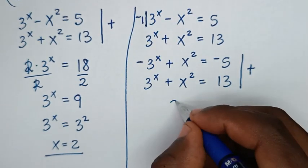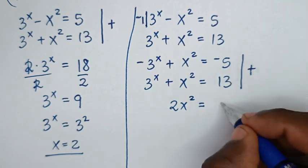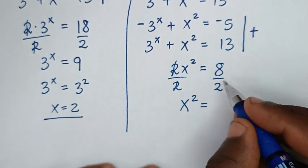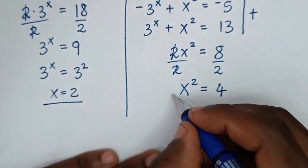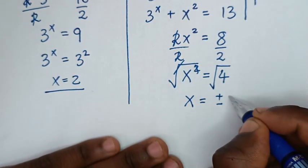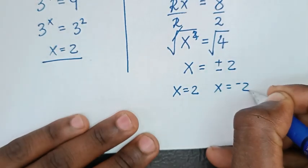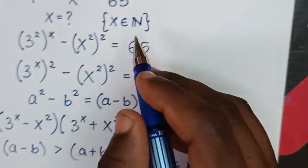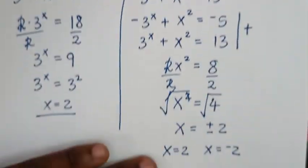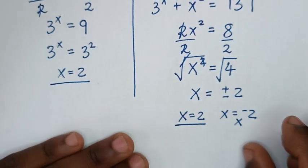After adding, x squared plus x squared gives 2x squared, and the 3 power of x terms cancel. So 2x squared is equal to negative 5 plus 13, which is 8. Then we divide both sides by 2, giving x squared is equal to 4. Applying square root on both sides, x is equal to plus or minus 2. So we have two solutions: x equal to 2 and x equal to negative 2. But the condition from our problem is that x is an element of the natural numbers. Natural numbers are positive: 1, 2, 3, and so on. Negative 2 is a negative number, so this solution is rejected. Therefore, x is equal to 2.